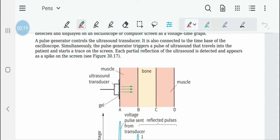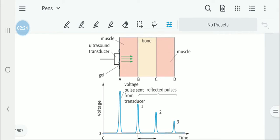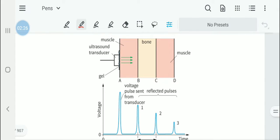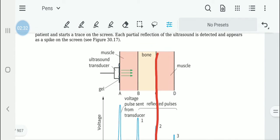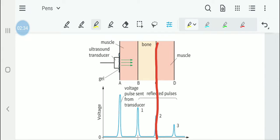When it reaches this second boundary it will get reflected as well. This is the second boundary, and the last boundary is beyond the muscle and air.